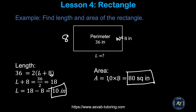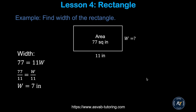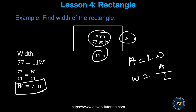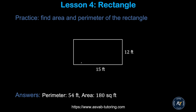In this next problem, the area is given as 77 and one side is 11. Since area equals length times width, you can find the width by dividing area by length, giving width equal to 7 inches. Now pause the video and try the practice problem yourself — make sure you get a perimeter of 54 and an area of 180.